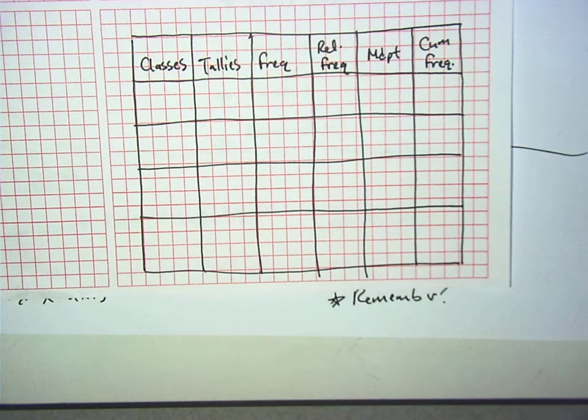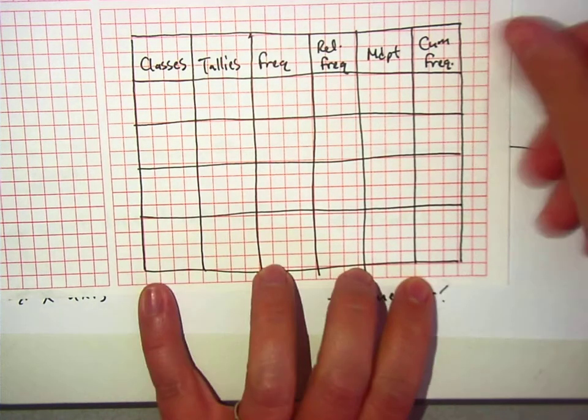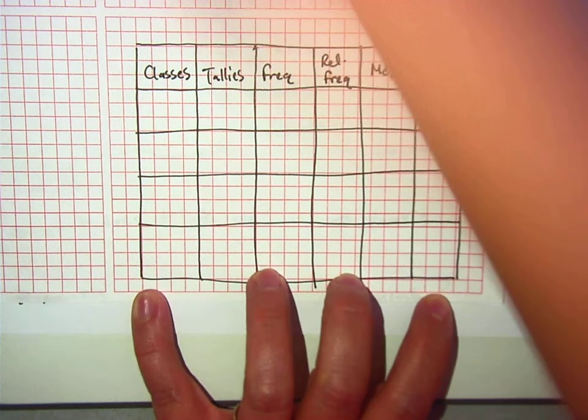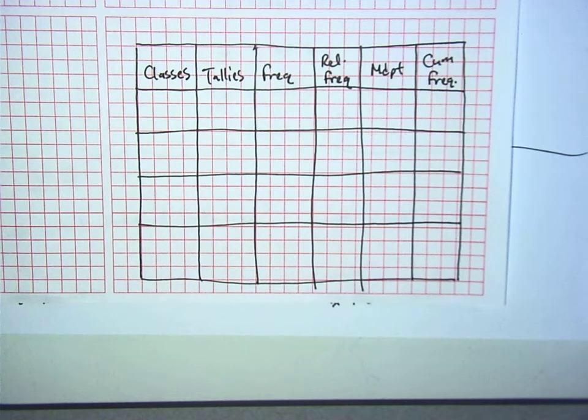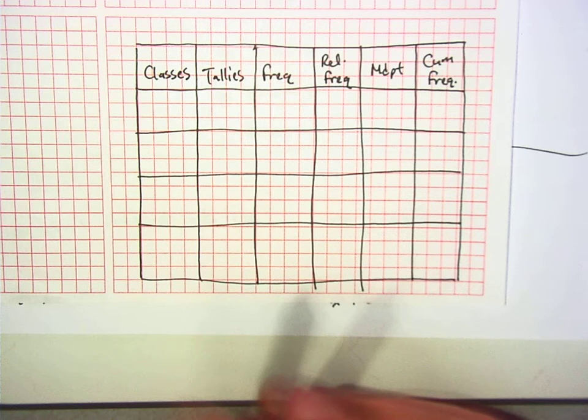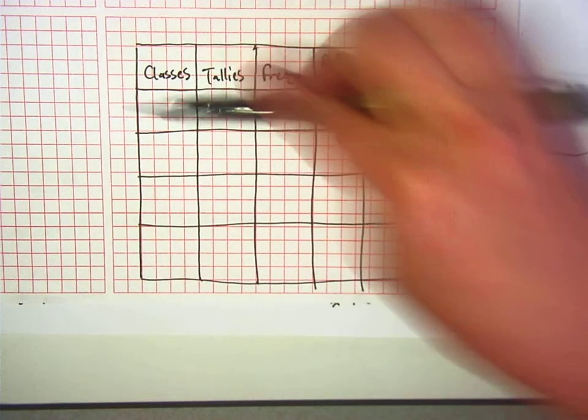The first thing you should have done is 10 minus 0, which is 10, then divided by 4. How do you know there are four classes? Because there's four of these. So 10 divided by 4 is 2.5, which rounds up to 3.